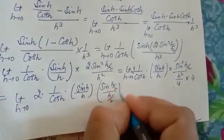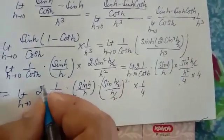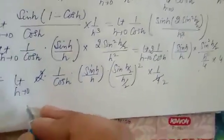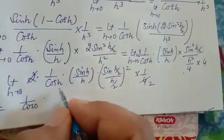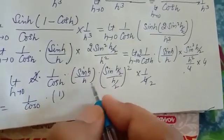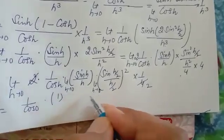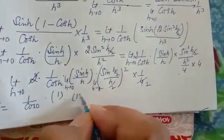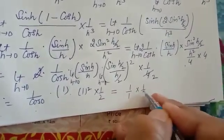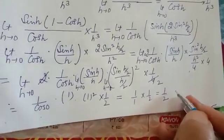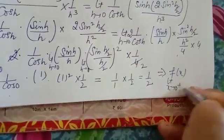Applying the limit as h tends to 0: (1/cos 0) = 1, (sin h / h) → 1 by the standard limit, and (sin(h/2) / (h/2))² → 1² = 1 by the squeeze principle. So the right-hand limit equals (1/2) · 1 · 1 · 1 = 1/2. Therefore, the limit as x tends to 0⁺ of f(x) equals 1/2.